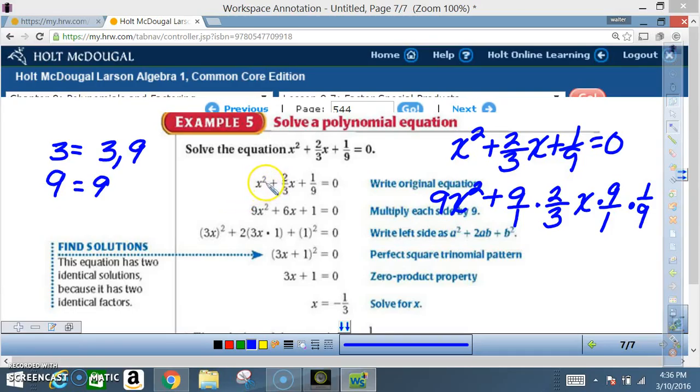All right. Now, for those of you who may be confused as to why they said multiply each side by nine, it's because they want to get rid of the fractions. They want to get rid of the denominators.